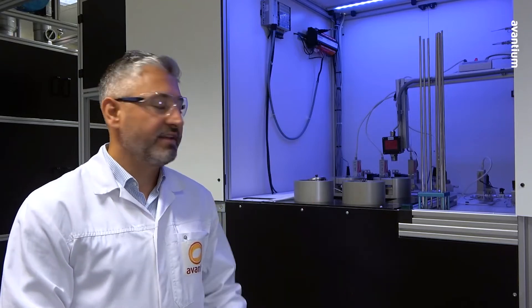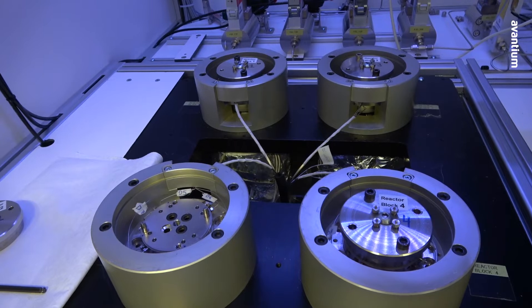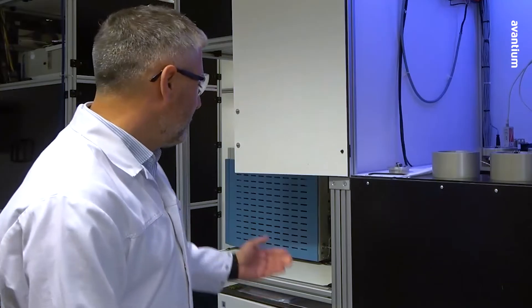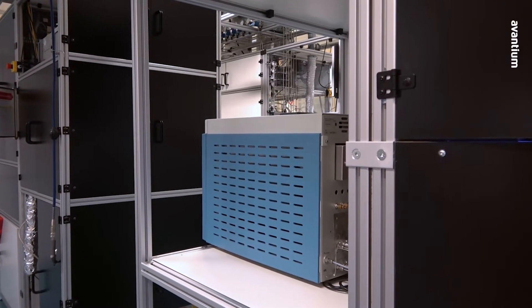This unit has 16 reactors in parallel. You can see here four blocks of four reactors each. And then here on the left side you can see the GC where all the gas products are analyzed.